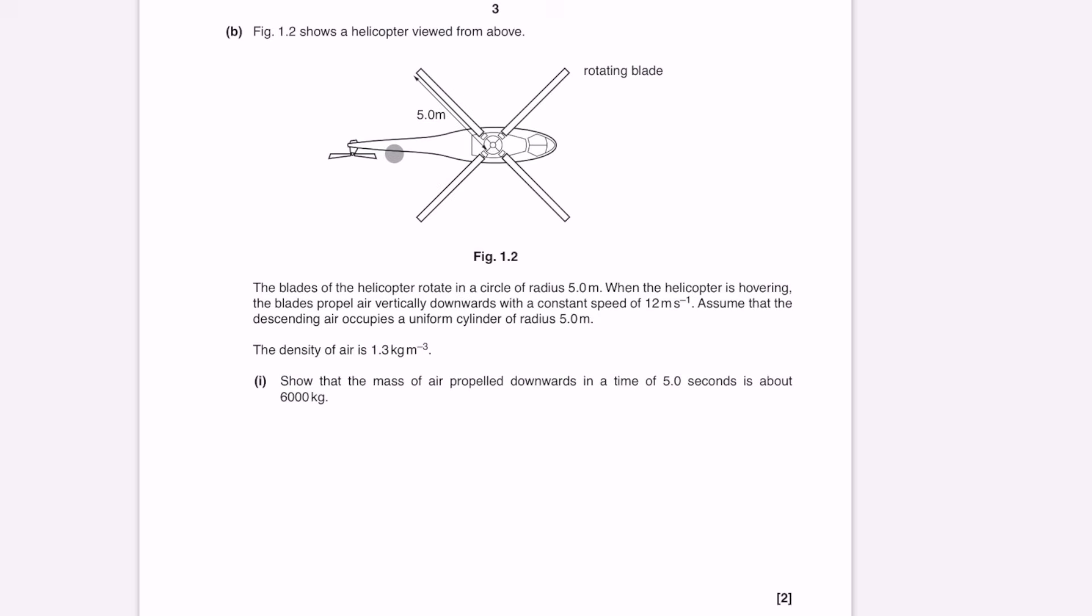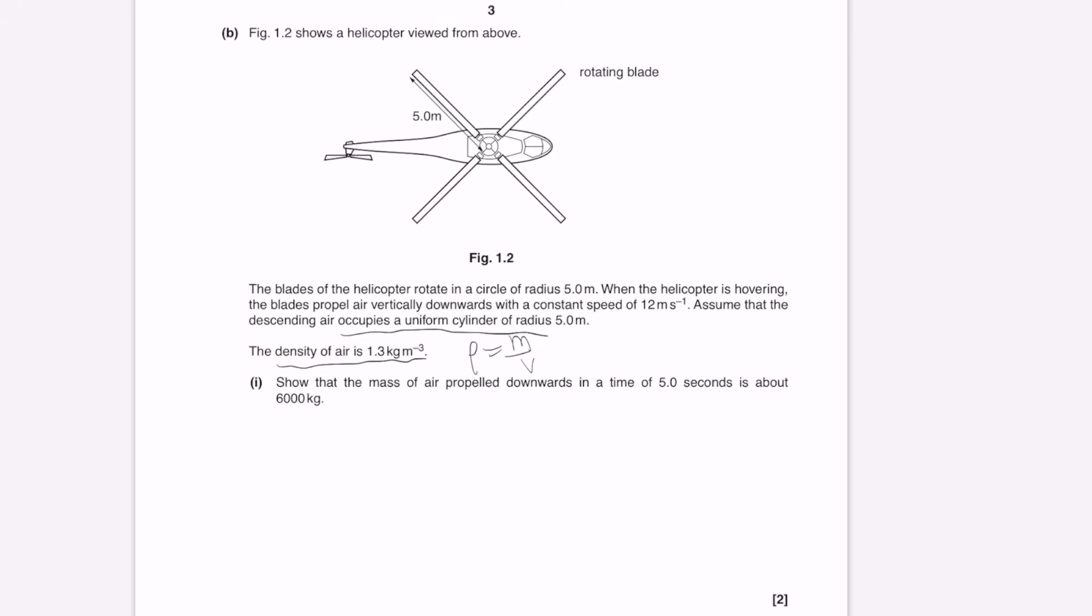Part B, figure 1.2 shows a helicopter viewed from above. The blades of the helicopter rotate in a circle of radius 5 meters. When the helicopter is hovering, the blades propel air vertically downwards with a constant speed of 12 meters per second. Assume that the descending air occupies a uniform cylinder. We're given the density of air to be around 1.3 kilograms per cubic meter. Anytime you see mass density given in an A-level question, write down the formula that density is mass over volume. Typically in questions like this, we have to express the mass. So I'm going to write that the mass is density multiplied by volume.